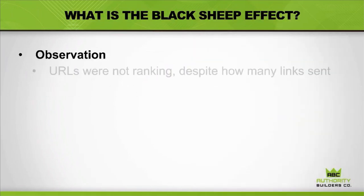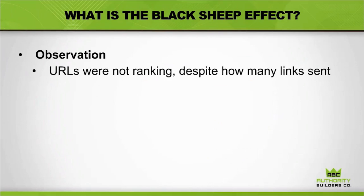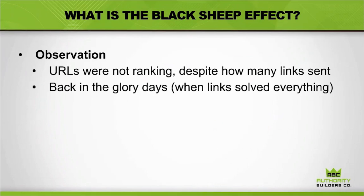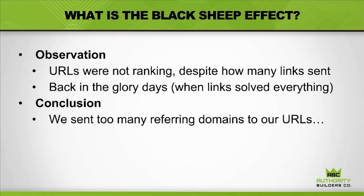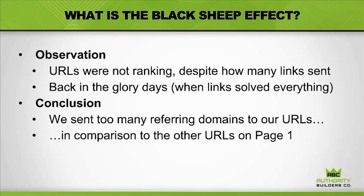The observation: we had URLs that were not ranking despite how many links were sent. Once we started digging into what was going on at page one — I'm ranked number 10, what's different from me versus the people at the top? This was back in the days when links solved everything. The conclusion was we had sent too many referring domains to our URLs. We were over-linking, over-cooking the URLs we were trying to rank. They were getting stuck — we looked like a black sheep, not blending in with page one.